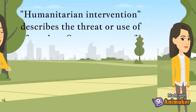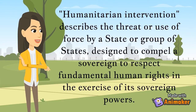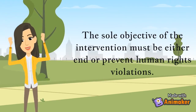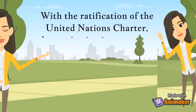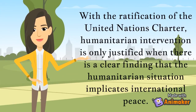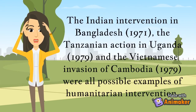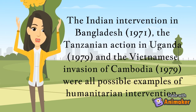Humanitarian intervention describes the threat or use of force by a state or group of states designed to compel a sovereign to respect fundamental human rights in the exercise of its sovereign powers. The sole objective of the intervention must be to either end or prevent human rights violations. With the ratification of the United Nations Charter, humanitarian intervention is only justified when there is a clear finding that the humanitarian situation implicates international peace. The Indian intervention in Bangladesh (1971), the Tanzanian action in Uganda (1979), and the Vietnamese invasion of Cambodia (1979) were all possible examples of humanitarian intervention, but in all three cases the belligerents chose to justify their actions under the rubric of self-defense.